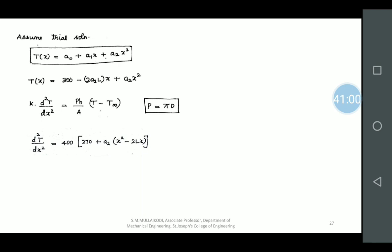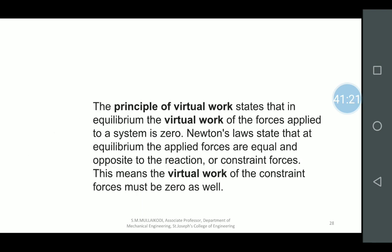Put the trial function into the boundary conditions, then find out the residual equation R: d²T/dx² − 400 × 270. Taking this to that side gives you the residual equation. From there, you can apply the point collocation, least square, subdomain, and Galerkin methods.